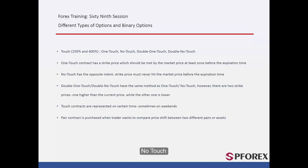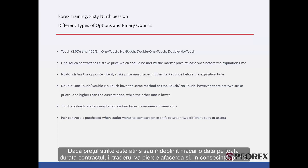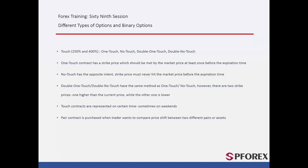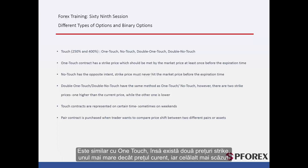No Touch: If the strike price is touched or met even once throughout the duration of the contract, the trader will lose the deal and consequently the premium. Double One Touch: It is similar to the one touch method; however, there are two strike prices — one higher than the current price and one lower. Even if the price hits any of the strike prices during the contract time, the deal would be successful for the trader.